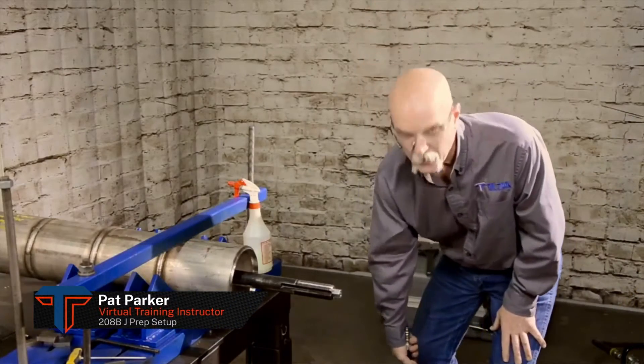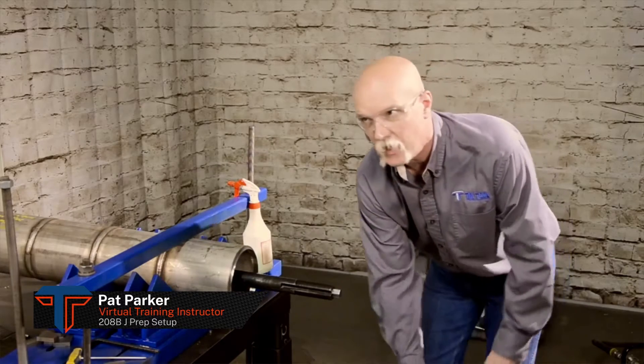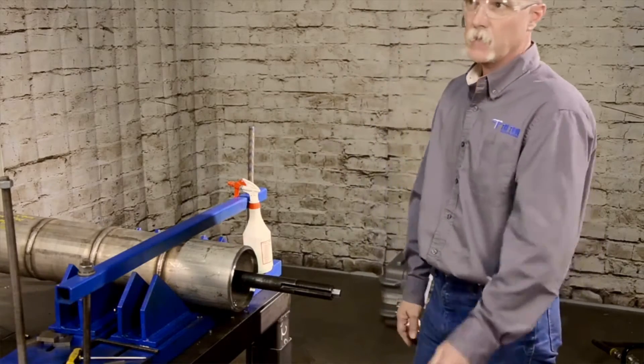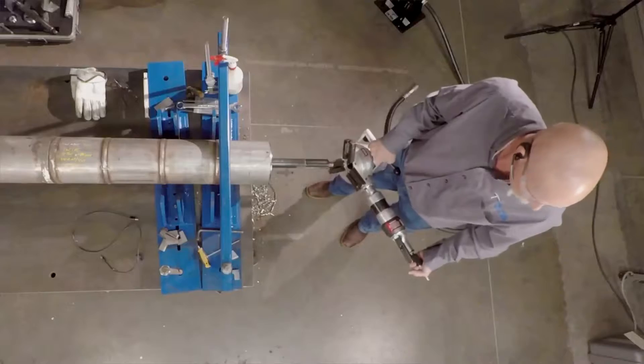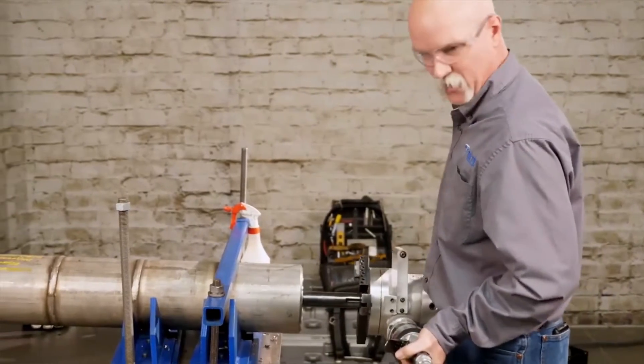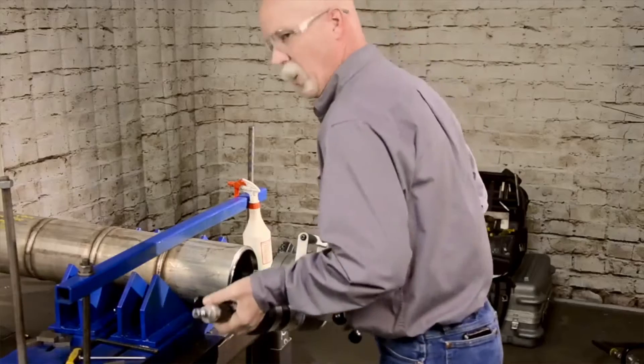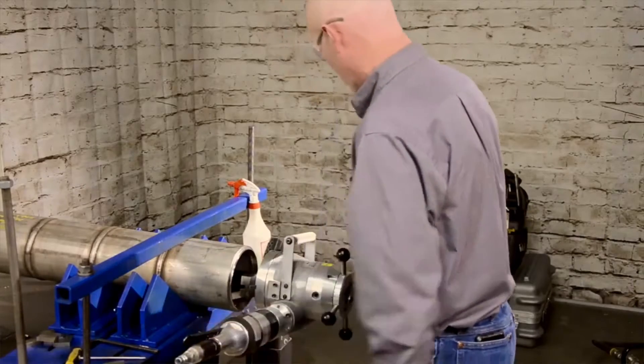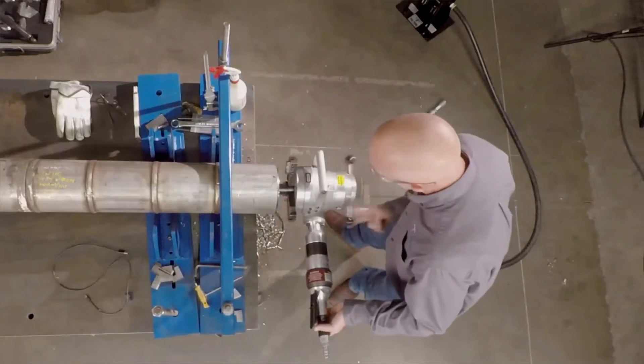We're going to go over a quick video on doing a J prep tooling setup with a 208 beat, doing 6 inch stainless schedule 80 pipe. Set the mandrel in there, just want to pick out where there's not a seam, and go ahead and throw our machine up on there.